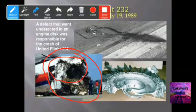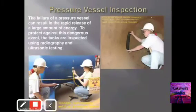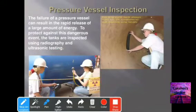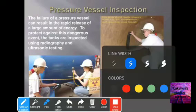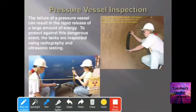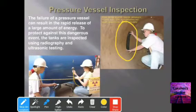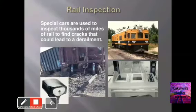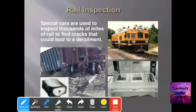For pressure vessel inspection, the failure of a pressure vessel can result in a rapid release of a large amount of energy. To protect against this, tanks are inspected using radiography and ultrasonic testing. For rail inspection, special cars are used to inspect thousands of miles of rail to find cracks that could lead to derailment.